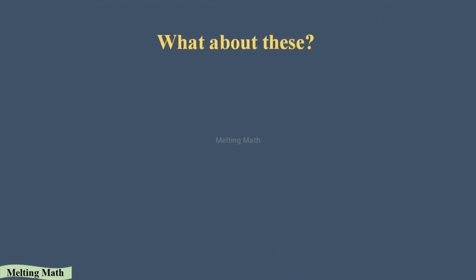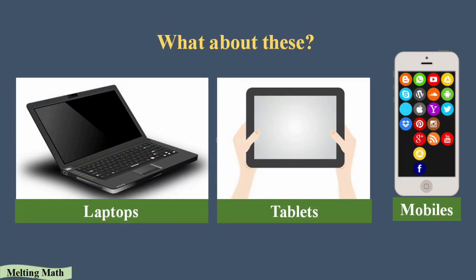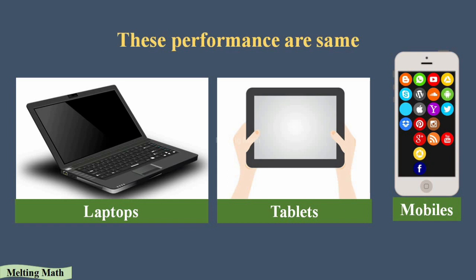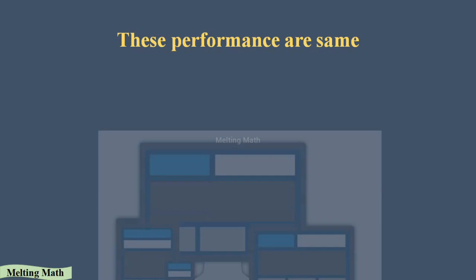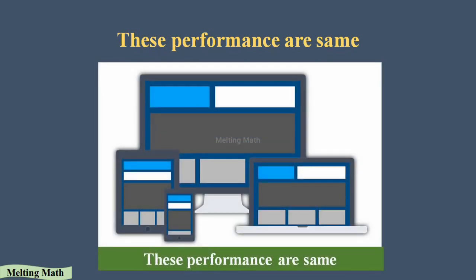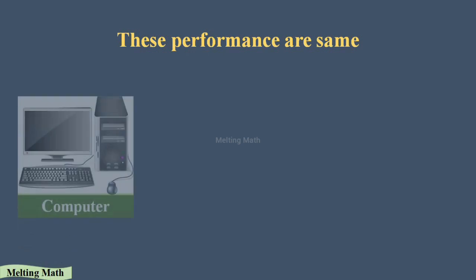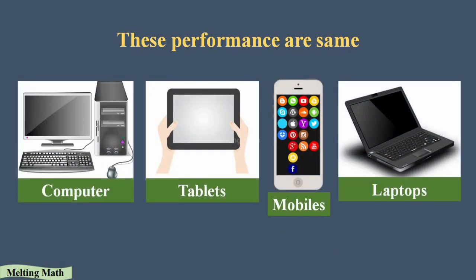Laptops, tablets, and mobile phones are different types of computers because they perform the same functions as a computer. For example, in a computer we can watch YouTube, and similarly in a laptop, tablet, or mobile phone we can also watch YouTube. The features of all these devices — computers, tablets, mobile phones, and laptops — are the same, that is why they perform in the same manner.